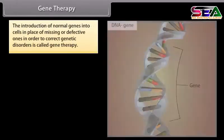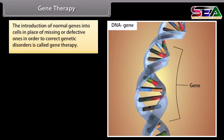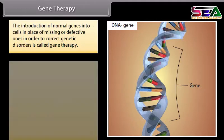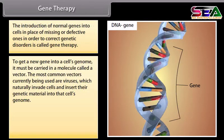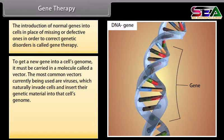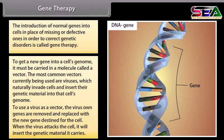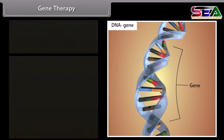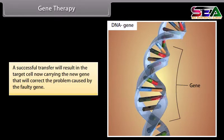Gene therapy: the introduction of normal genes into cells in place of missing or defective ones in order to correct genetic disorders is called gene therapy. To get a new gene into a cell's genome, it must be carried in a molecule called a vector. The most common vectors currently being used are viruses, which naturally invade cells and insert their genetic material into that cell's genome. The virus's own genes are removed and replaced with a new gene destined for the cell. When the virus attacks the cell, it inserts the genetic material it carries, resulting in the target cell now carrying the new gene that corrects the problem.